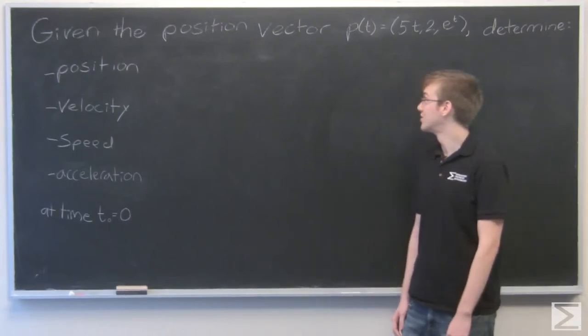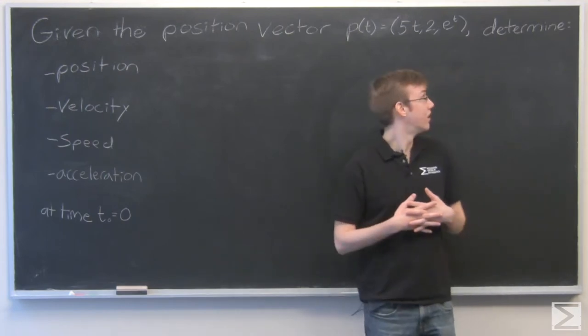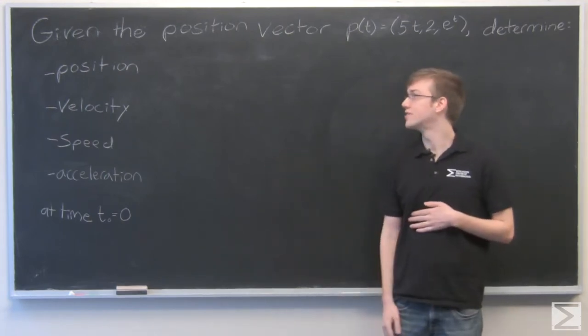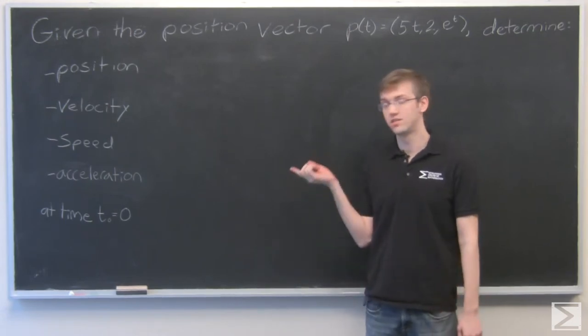So for this problem, given the position vector p(t) equals 5t, 2, and e to the t, we need to determine these four quantities: position, velocity, speed, and acceleration, all at time t0 equal to 0.